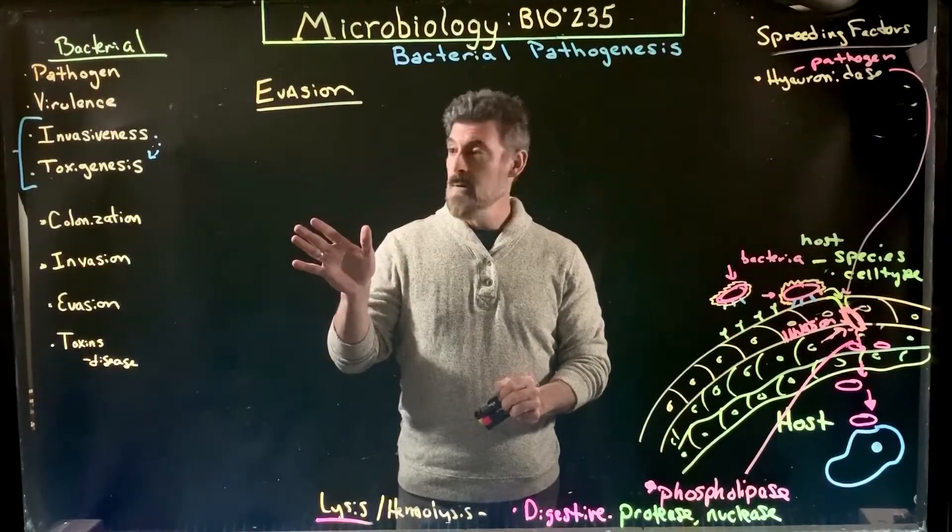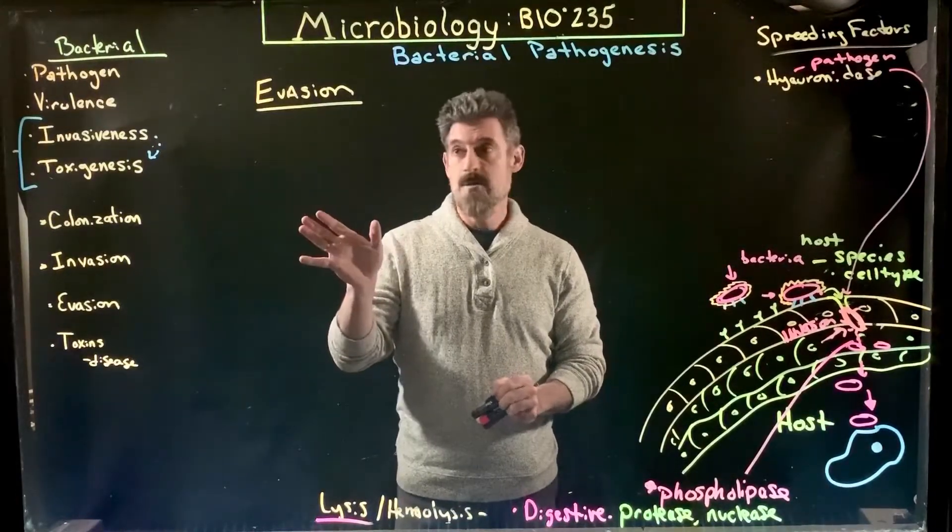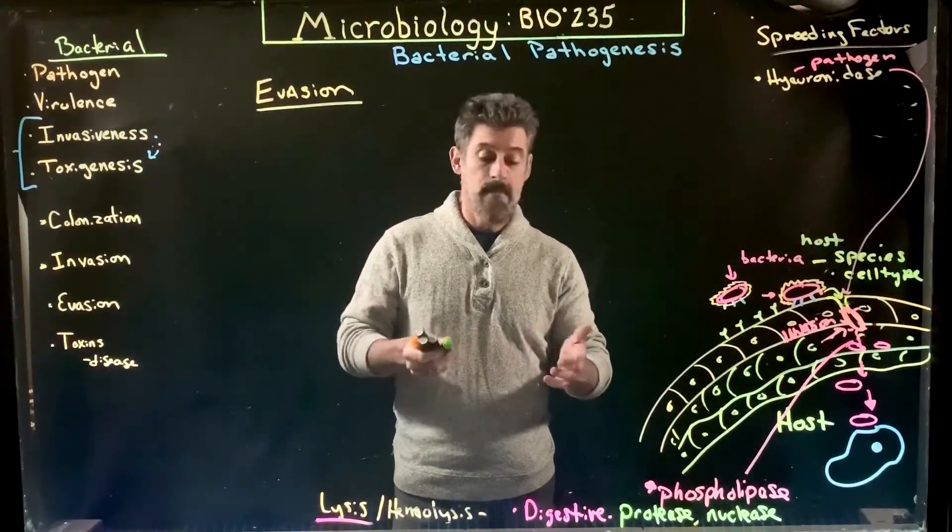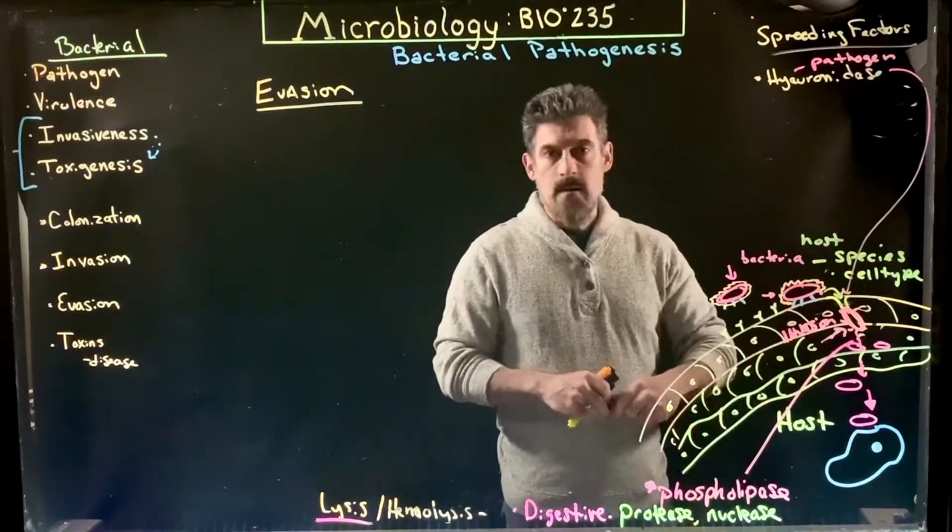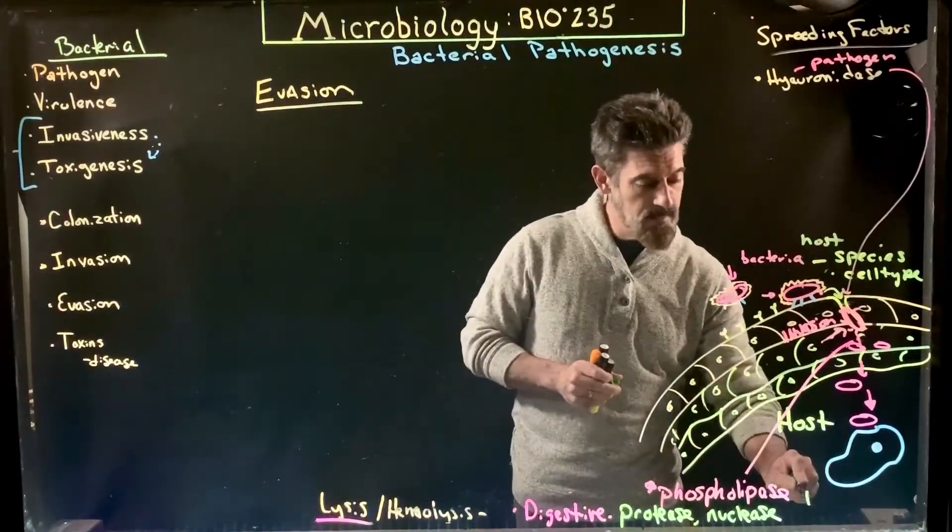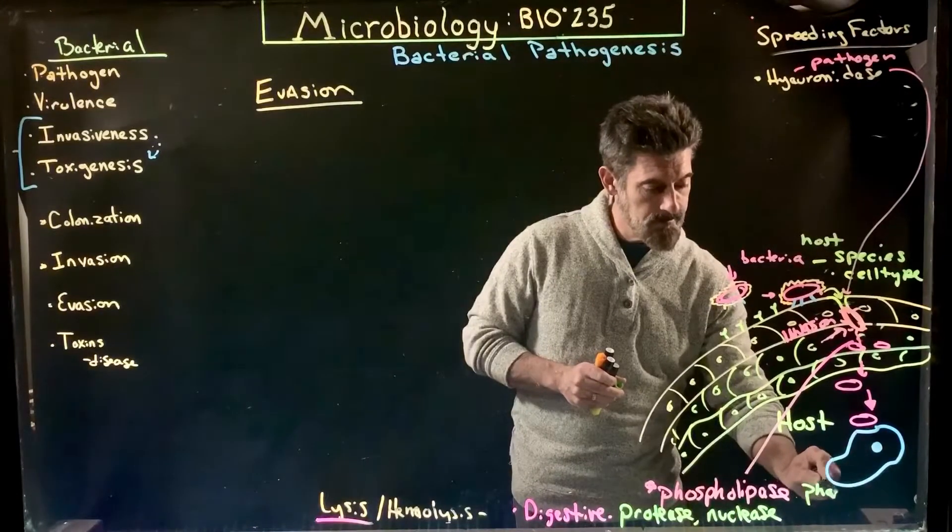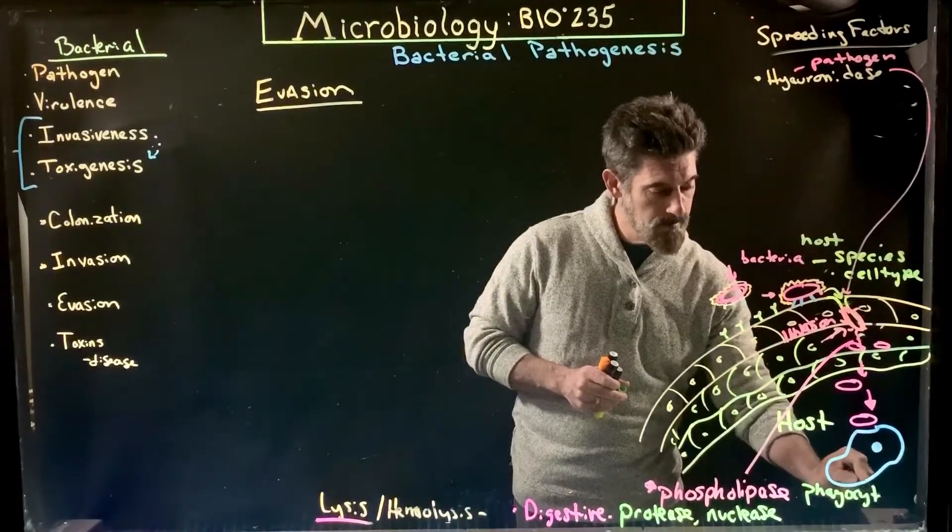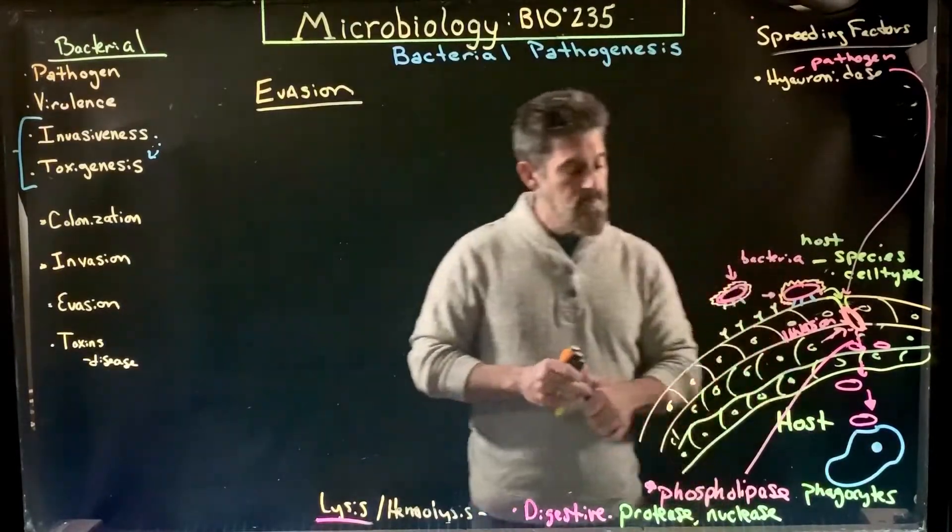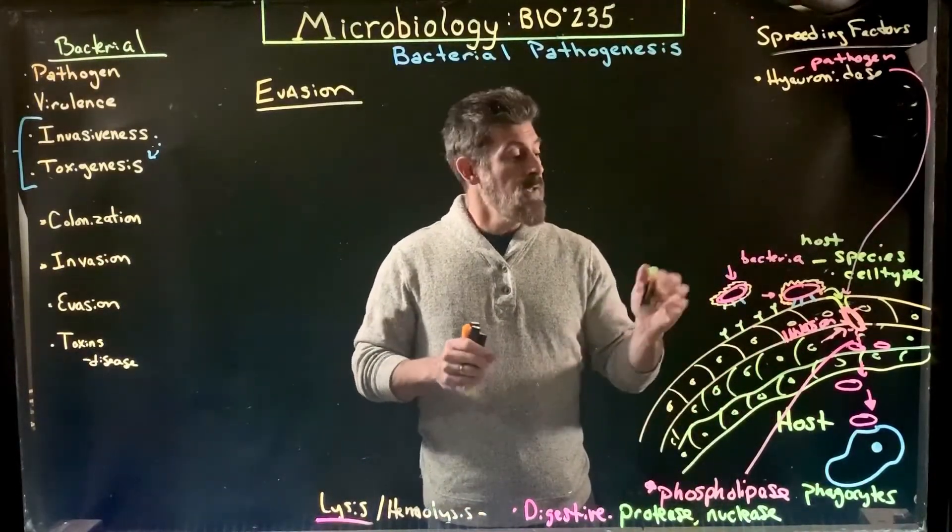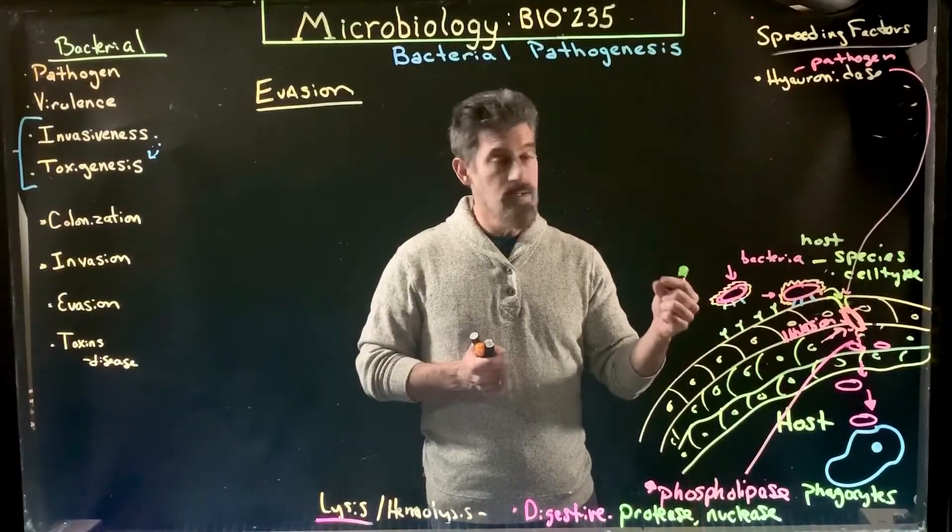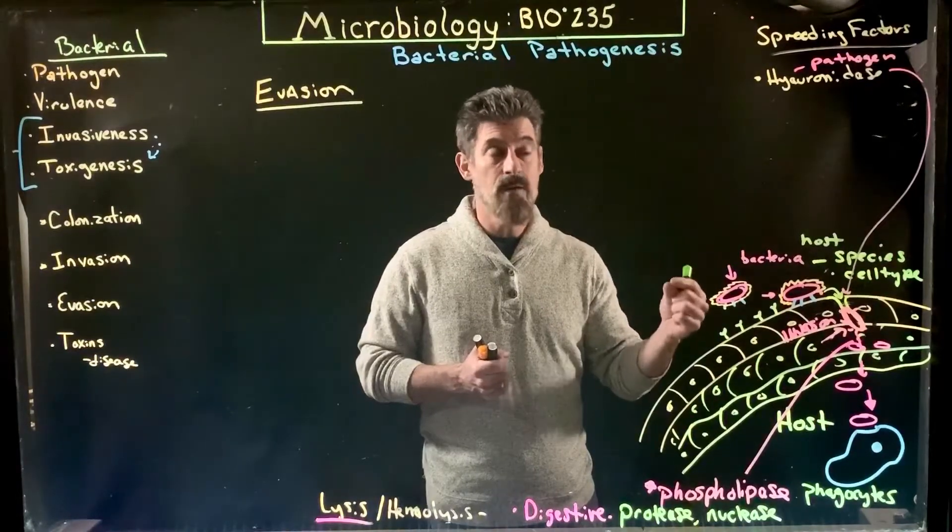Okay, so the next part that we're going to talk about is evasion of the immune response. Animals like us have cells called phagocytes. They're part of our first line of defense and are more generic in terms of what they're going to bind to, so they don't necessarily have a very specific cell that they're after.